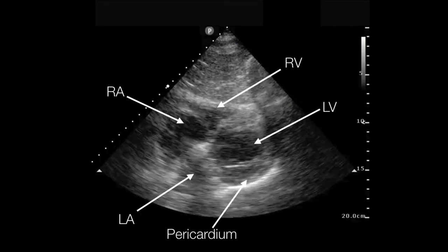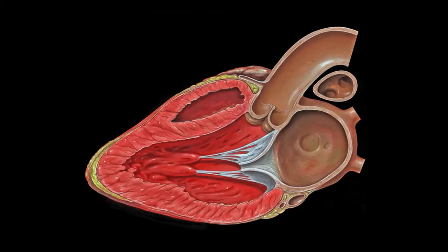The parasternal long axis is another very useful window — I use these two interchangeably. If you can't get one, jump to the other. The parasternal long axis, as its name implies, is done just to the left of the sternum, usually in the second or third intercostal space, with the probe indicator angling in the long axis of the heart. The heart goes roughly from right shoulder to left hip, so the probe axis angles about 45 degrees in that trajectory.